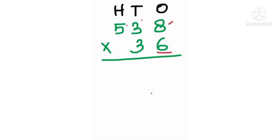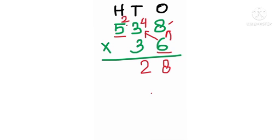Counting the table: 6 eights are 48 — we write 8 and carry 4 over to the 10s place. Now count the table of 6 three times: 6 threes are 18, adding 4 gives 22 — write 2 and carry 2 to the 100s place. Now 6 fives: 6 times 5 is 30, plus the carry of 2 gives 32.